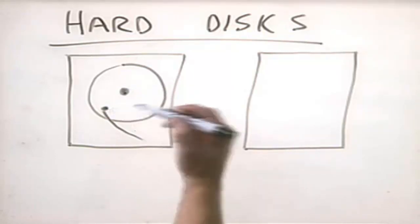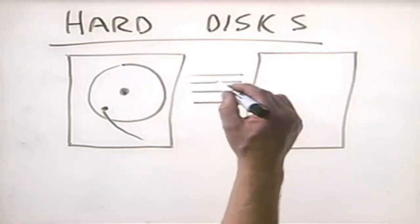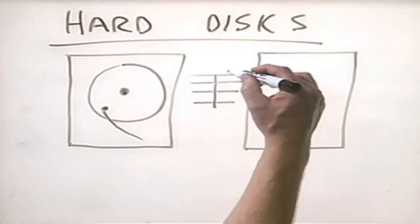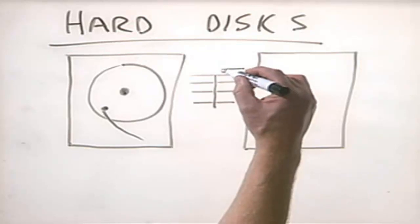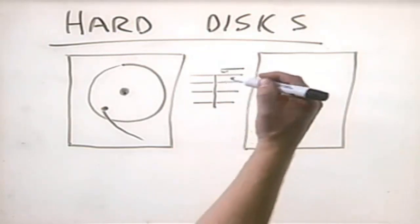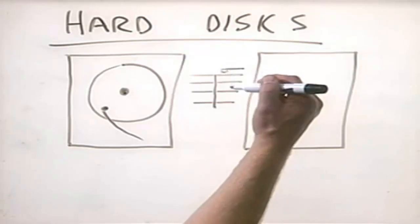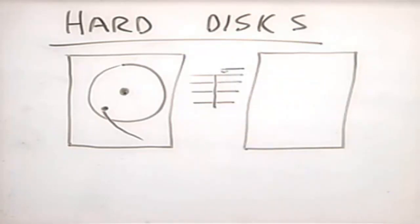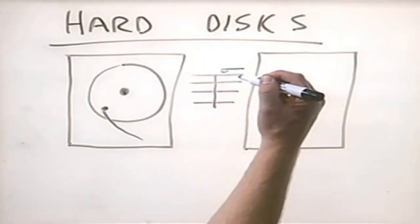With a hard disk drive, the head does not touch the surface because the spinning disk creates what's called a Bernoulli effect. The spinning creates a tiny cushion of air between the surface of the platter and the head. It's close enough that the magnetism in the head can magnetize or demagnetize areas of the hard disk drive to create zeros and ones to store binary data, but they don't actually touch.